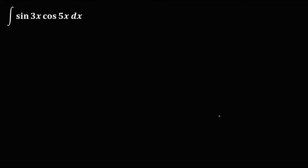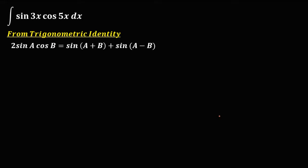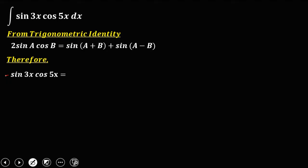So let's have this problem: find the integral of sine 3x cosine 5x dx. First, from the trigonometric identity that 2 sine a cosine b is equal to sine of a plus b plus sine of a minus b. From the given, we have sine 3x cosine 5x, and we need to rewrite this equation in that form.